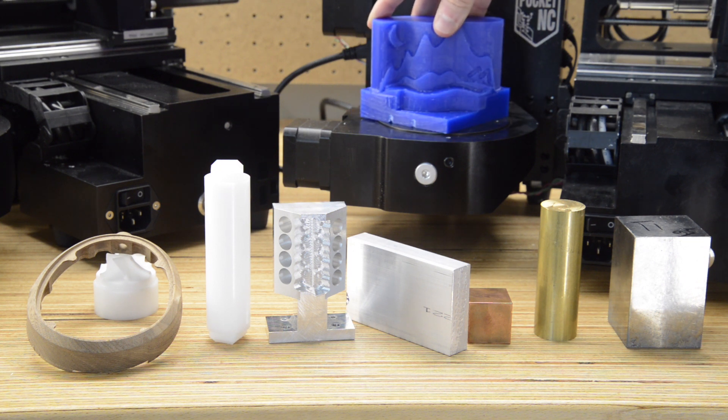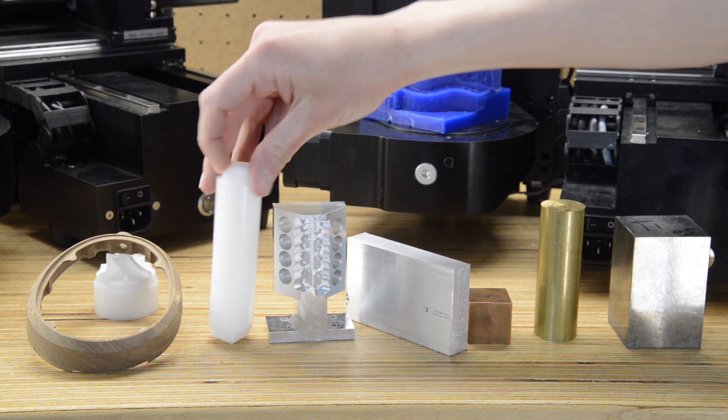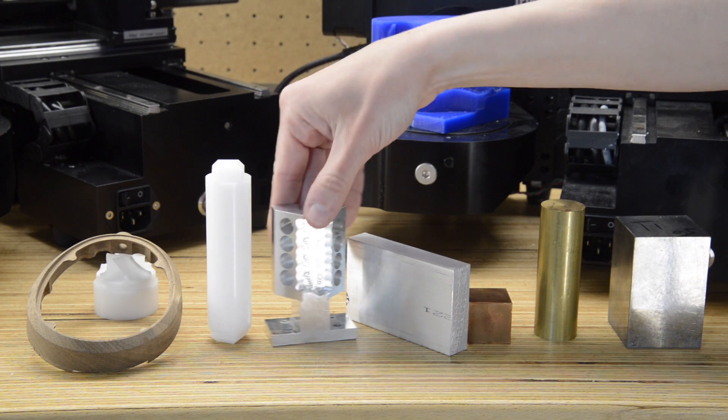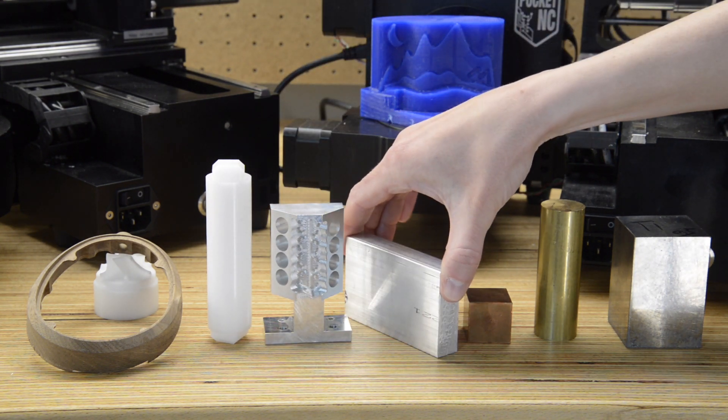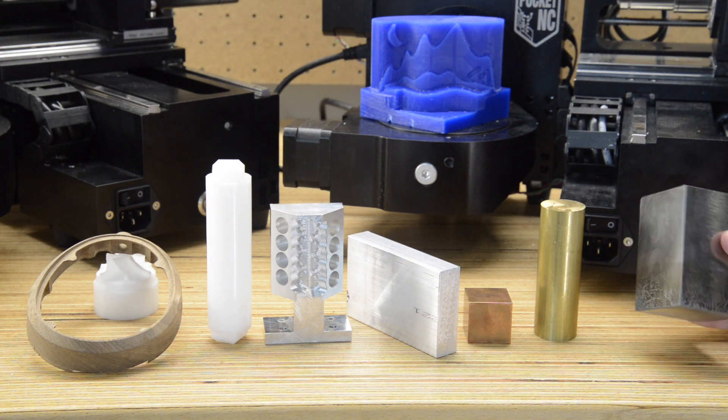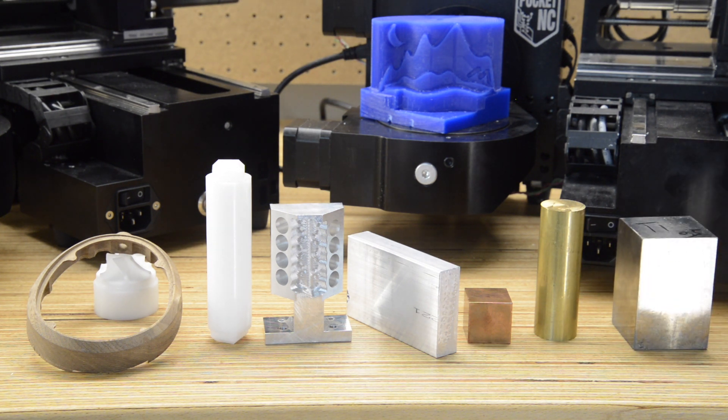The Pocket NC is great for cutting wax, delrin, aluminum, and softer steels if you aren't going for speed. The maximum hardness is that of G5 titanium or 35 HRC.